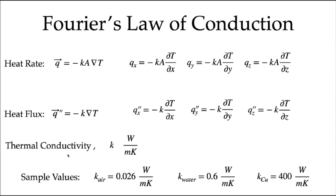The thermal conductivity is a material property — it changes for different materials and we'll examine this more in the upcoming module. Its units are watts per meter kelvin. For reference, the conductivity of air is about 0.026 W/m·K, which is why air makes a very good insulator if you keep it from moving. Liquid water has a conductivity of about 0.6 W/m·K — two orders of magnitude higher than air — which helps explain why you feel much colder in water than in air. Copper, a good electrical conductor, has a correspondingly high thermal conductivity of around 400 W/m·K.